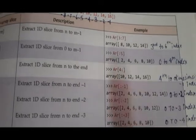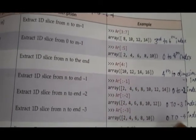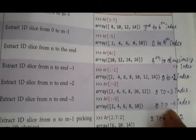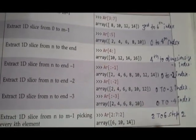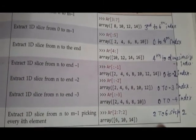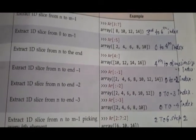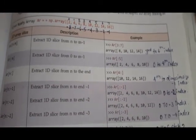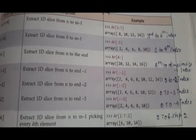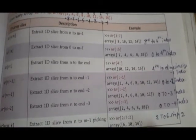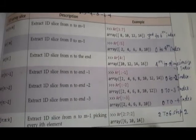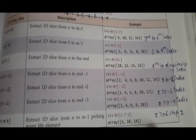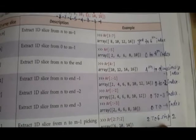Then [2:7:2] — start is 2, stop is 7 minus 1 which is the 6th index, and step is 2. So starting from the second index (value 6), it goes up to the 6th index (value 14) with step 2. Now I will show it on the screen also.